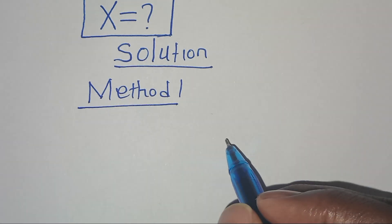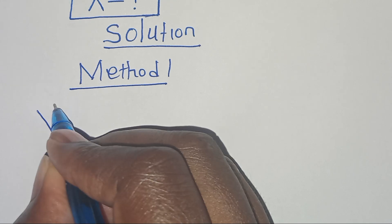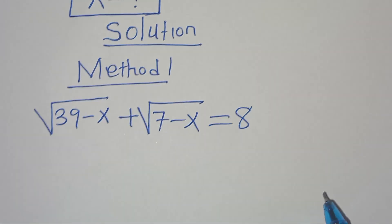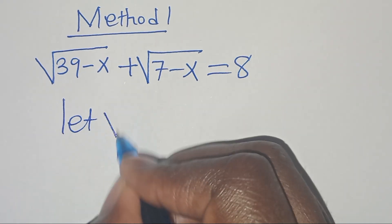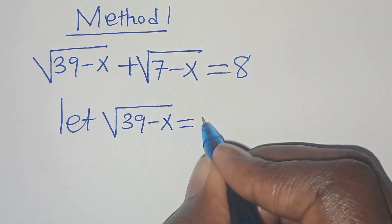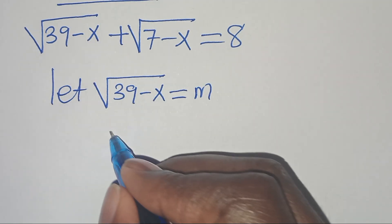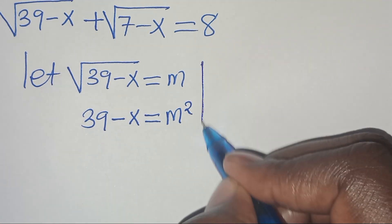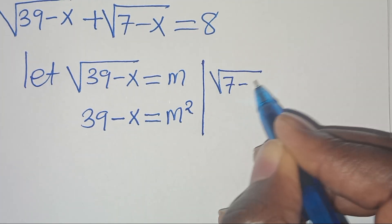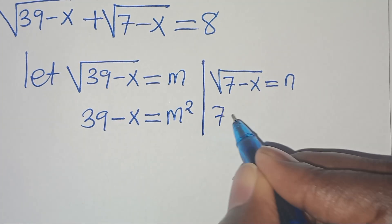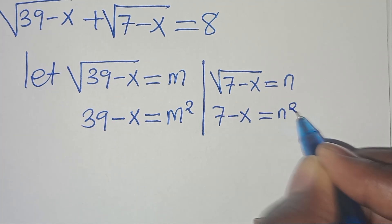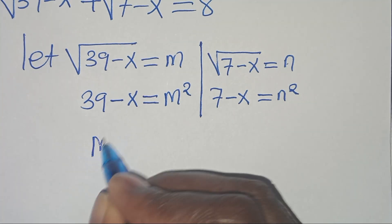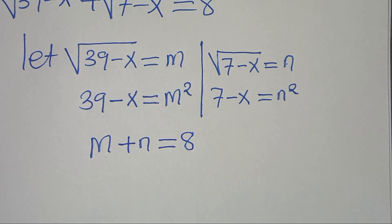Starting with Method 1: we have the square root of 39 minus x plus the square root of 7 minus x equals 8. We let the square root of 39 minus x equal m, so that 39 minus x equals m squared. Similarly, we let the square root of 7 minus x equal n, so that 7 minus x equals n squared. This implies that m plus n equals 8.